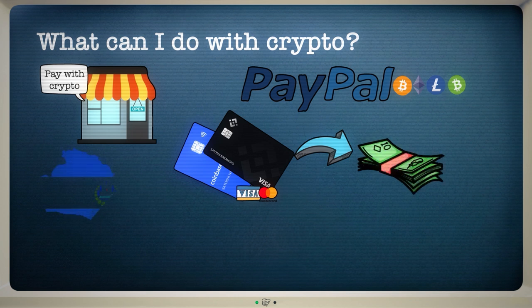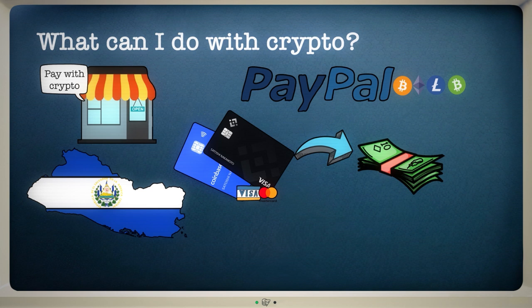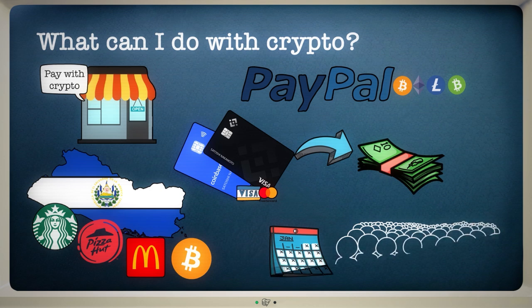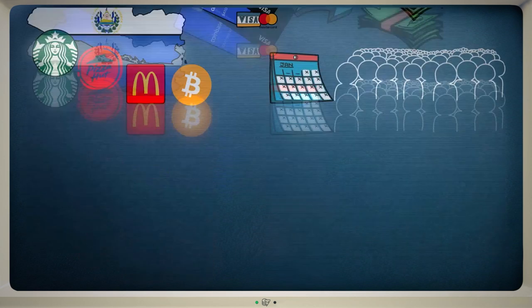El Salvador has also made Bitcoin legal tender, making it one of the few places in the world where Starbucks, Pizza Hut and McDonald's accept crypto directly. We're still at an early stage when it comes to crypto being used by the masses, but other exciting use cases have emerged too.